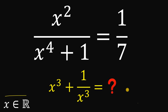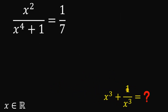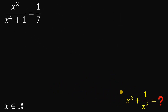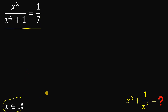Now suppose you paused the video — let's see if you got the correct answer. Using the equation x squared over x to the fourth power plus one equals one over seven, wherein x is a real number, our goal is to find the numerical value of x cubed plus one over x cubed.